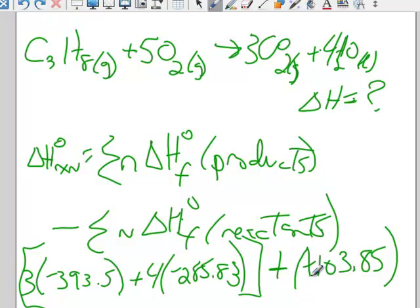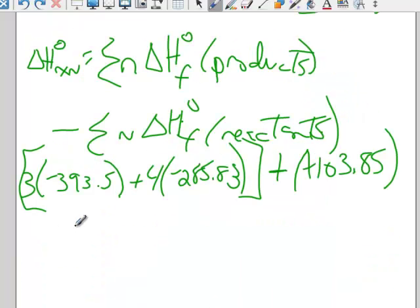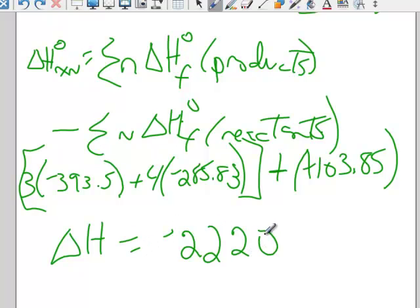3 times negative 393.5 plus 4 times negative 285.83 plus 103.85 gives me as an answer for a delta H equaling negative 2220 kilojoules per mole. These are all in kilojoules per mole in that table.